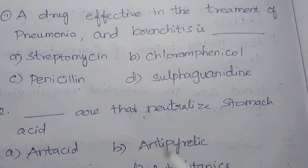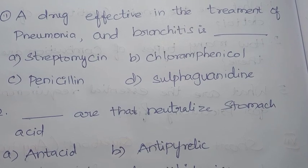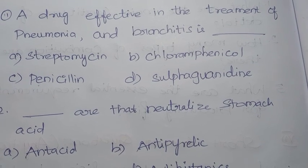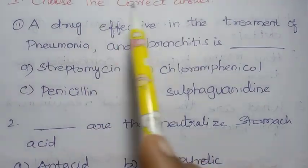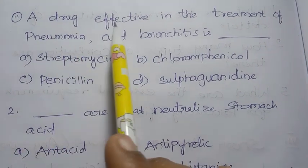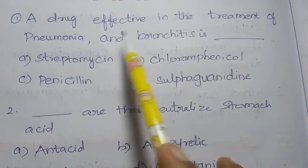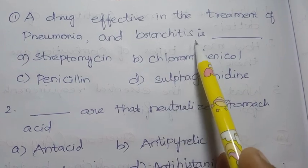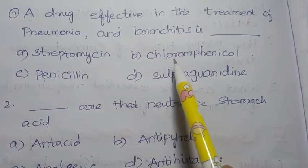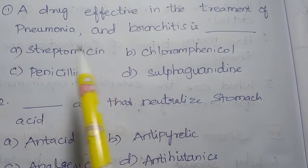This is the 2020 question paper. The first section is choose the correct answer. First question: a drug effective in the treatment of pneumonia and bronchitis is - the options are streptomycin, chloramphenicol, penicillin, and sulphaguanidine.